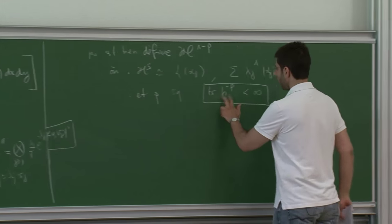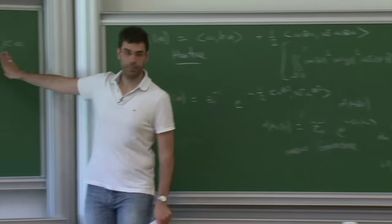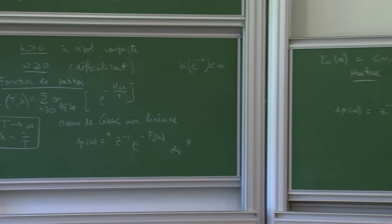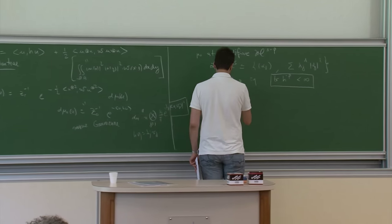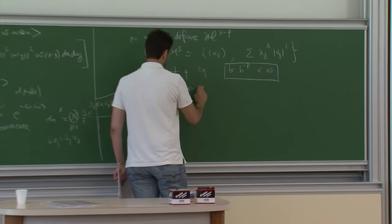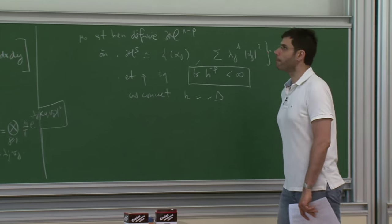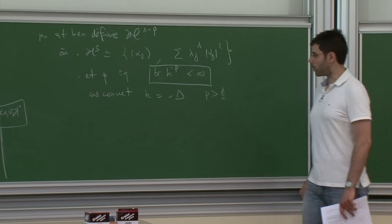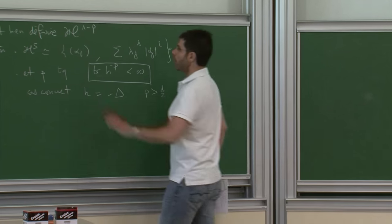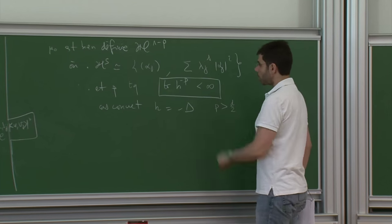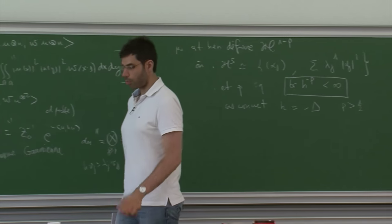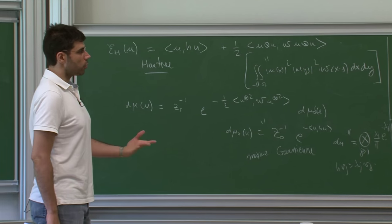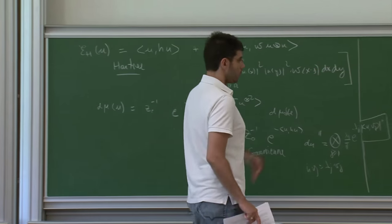La vraie hypothèse c'est que la trace de H^{-p} soit finie pour un certain P. La croissance des valeurs propres doit être polynomiale pour qu'on puisse trouver un P tel que la somme des λ_j^{-p} soit sommable. Pour le Laplacien il faut P > d/2. En dimension 1 on peut définir la mesure sur L², en dimension 2 elle est dans tous les Sobolev négatifs mais pas L², et en dimension 3 ça s'empire.